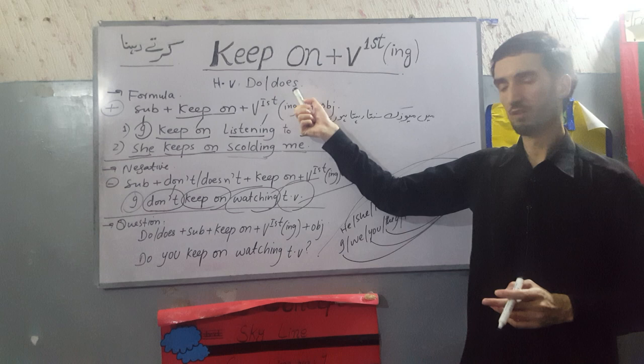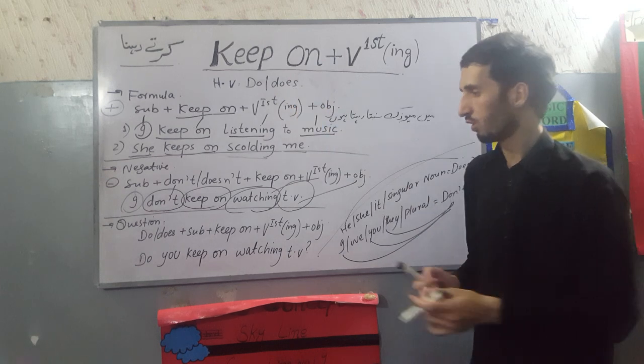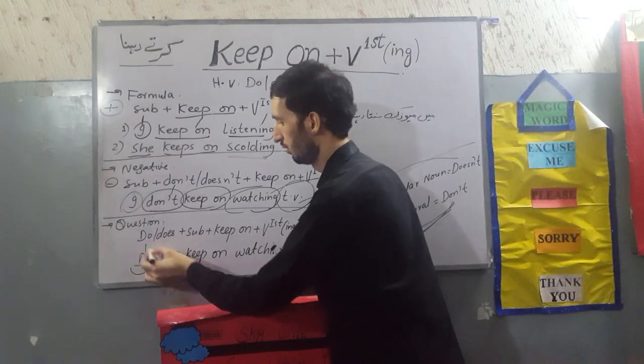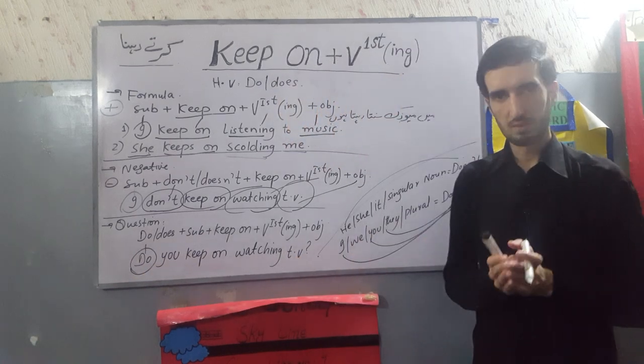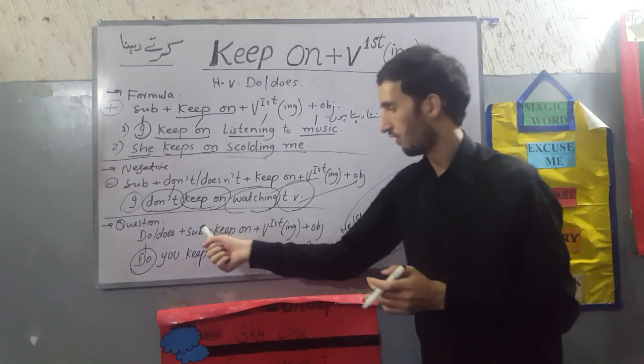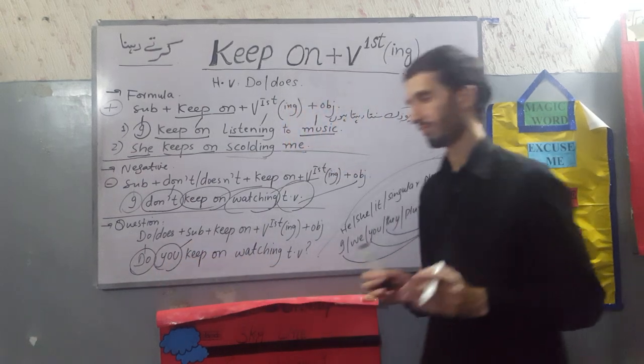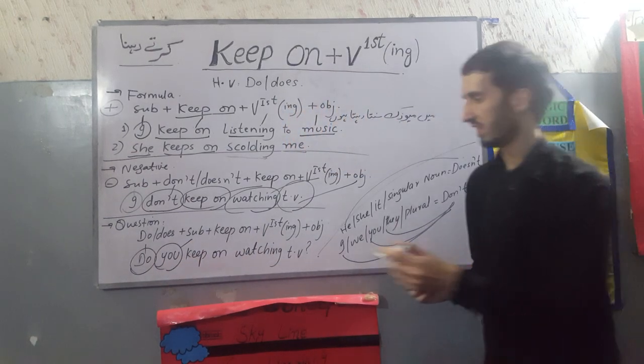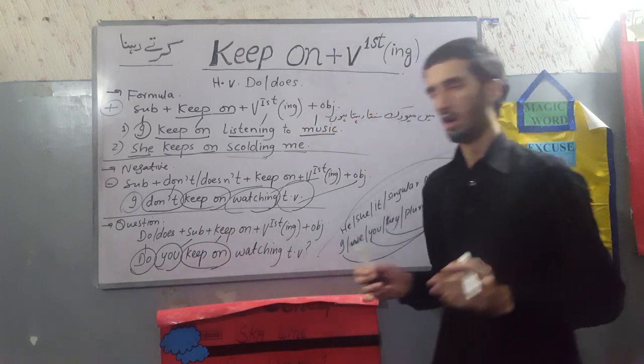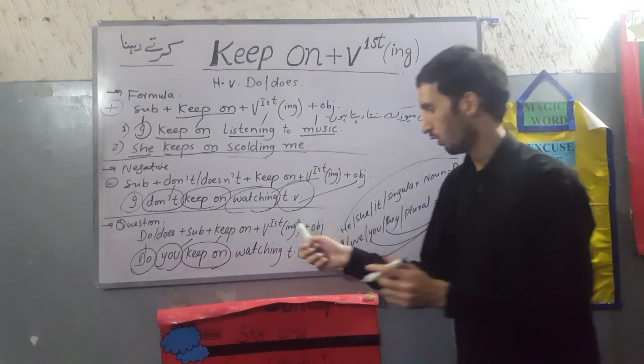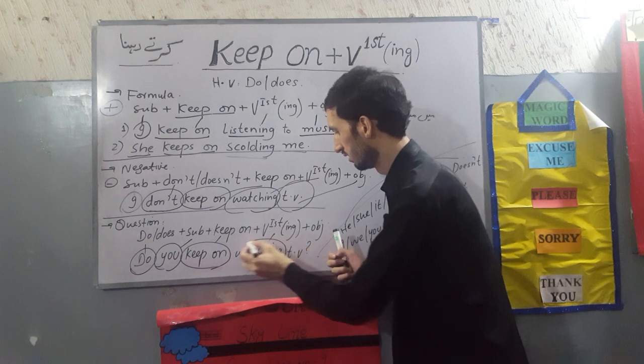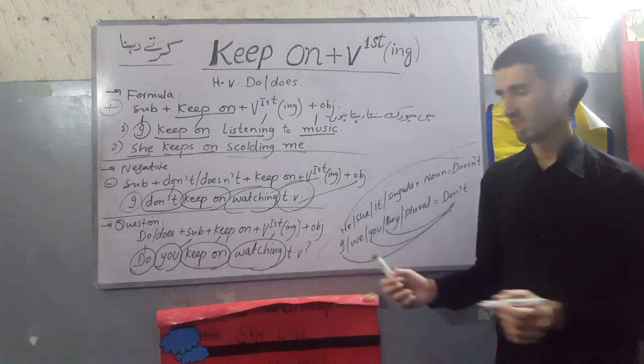Okay, question. The helping verbs are the first use of it. We have used it first. We have used do. Now, what are we going to do? What is the formula? Do, subject. We have used do, you. After that, our structure is keep on. After that, the ing form is watching. After that, the object is TV.